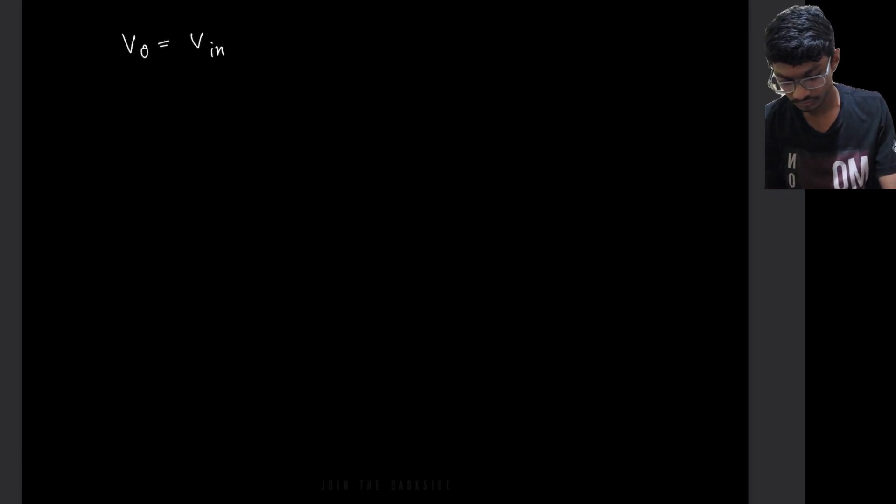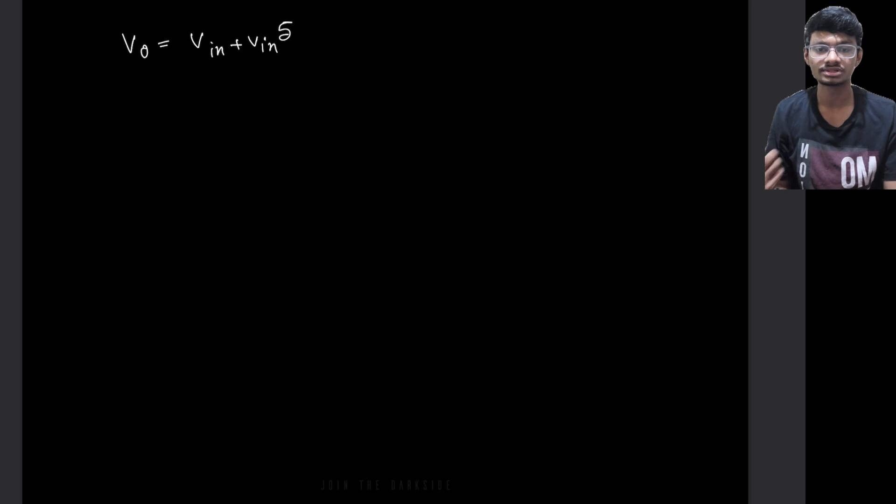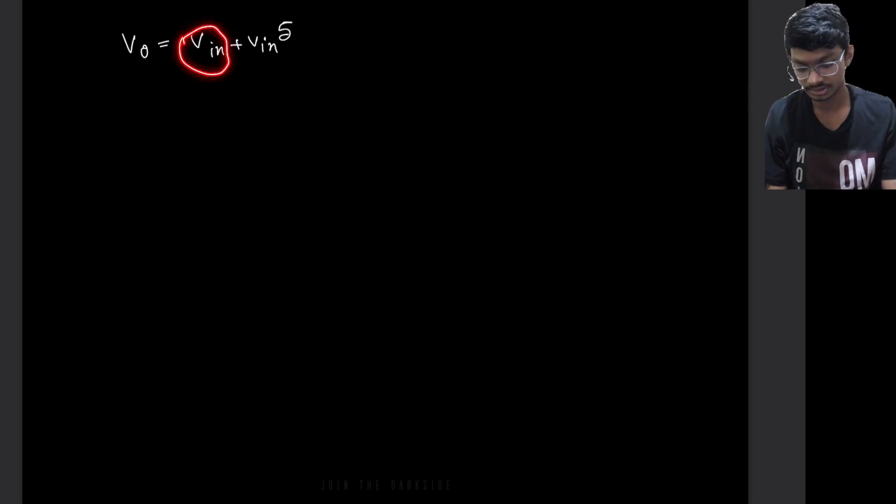V0 of T is equal to Vin plus Vin to the power 5. Now, what portion is the harmonic here? This is the linear portion. Whatever sine wave we pass in, the same frequency we get. The harmonic portion is this one.